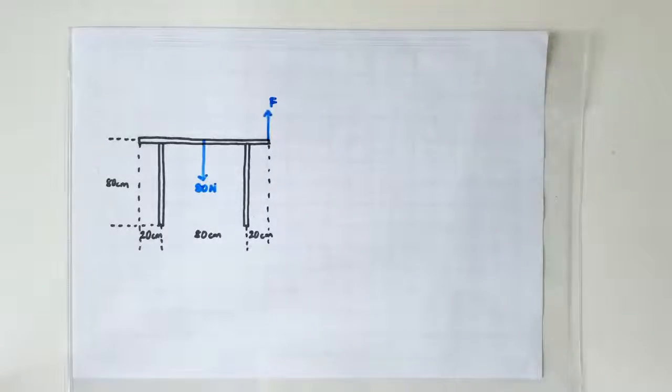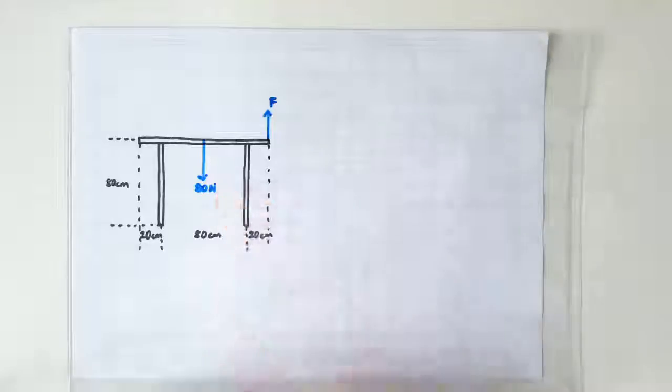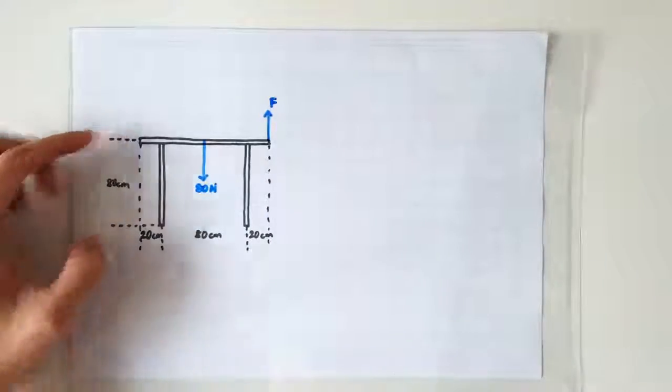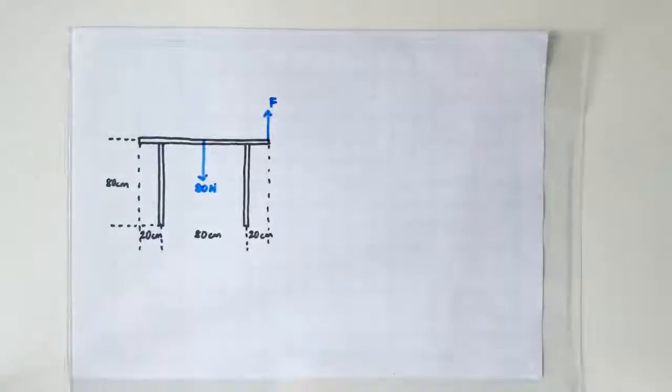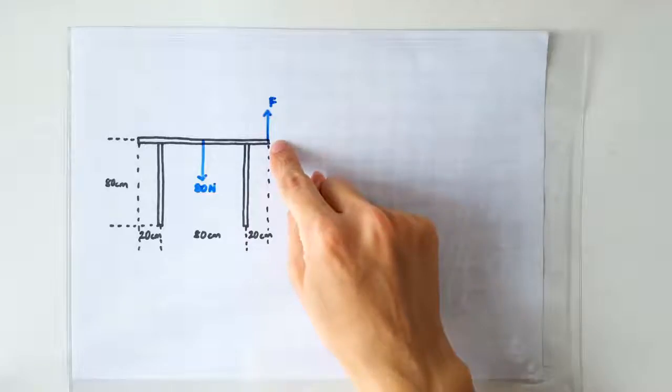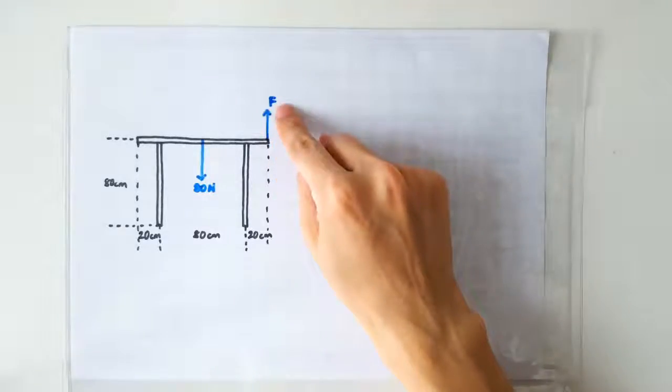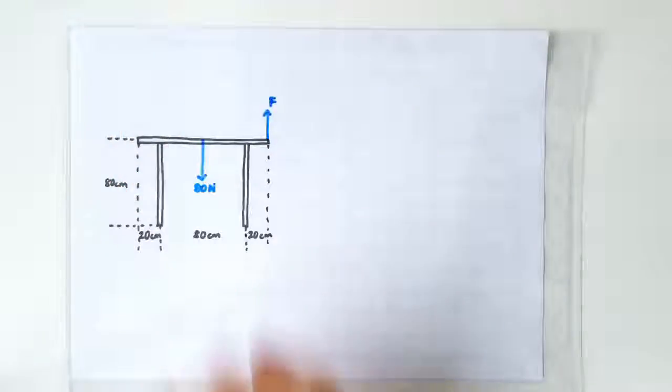Hello, we have here a table. Weight is 80 newtons, the height is 80 cm, and the length is 20 plus 80 plus 20 cm. We now apply an upward force at the right end of the table. What must this lifting force be before this table loses its rotational equilibrium?